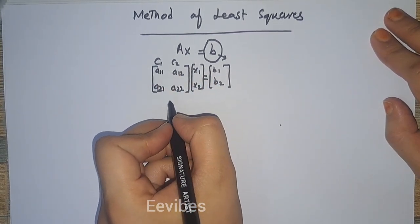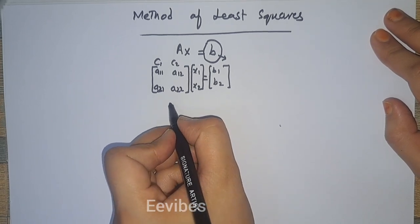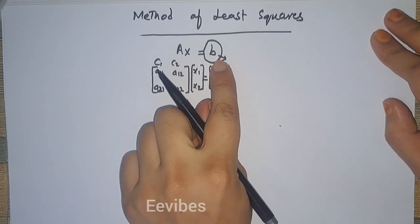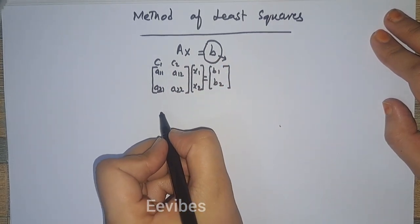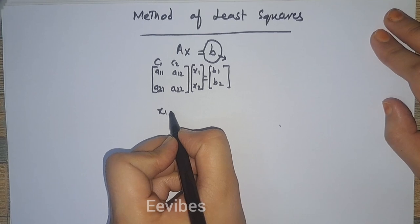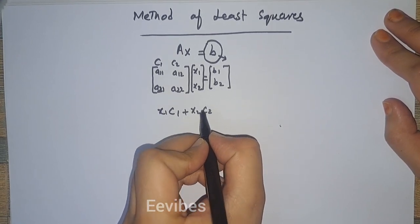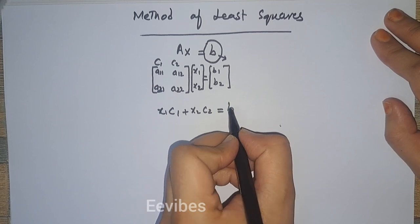So basically, if B lies in the column space of A, we see that the system is consistent. So X1 times C1 plus X2 times C2 should result in B.